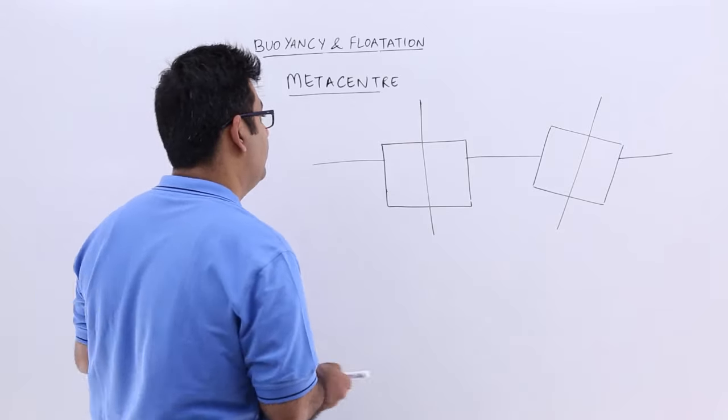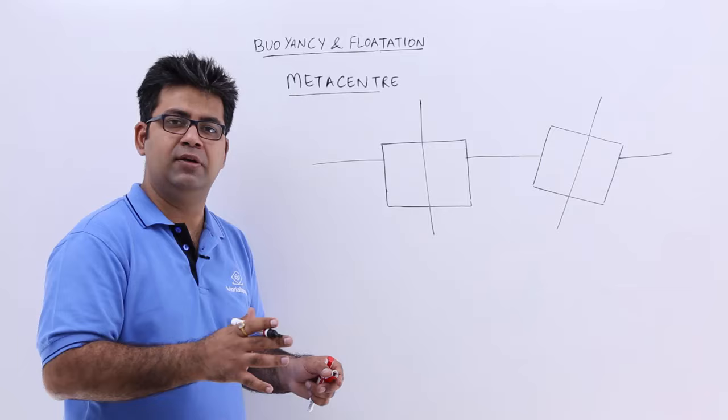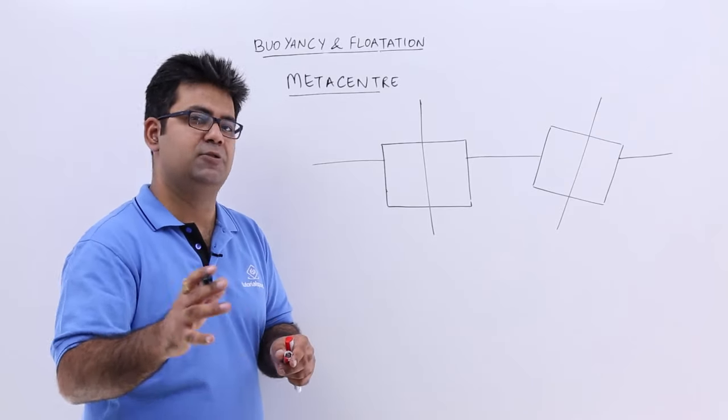Metacentre is obviously a point about which a body will start oscillating when it is given a disturbance by a small angle.